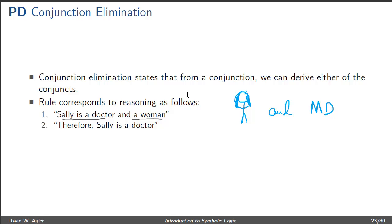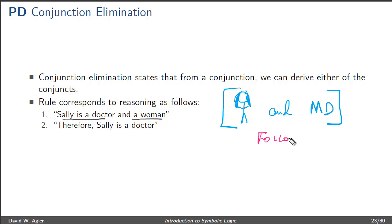That is, we can derive a different sentence which consists of one of the parts of the conjunction. So from 'Sally is a doctor and a woman' we can reason to 'Sally is a doctor.' We can state that from this sentence — Sally is a doctor and a woman — it follows that she is a doctor.